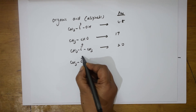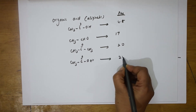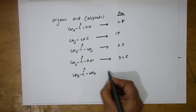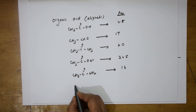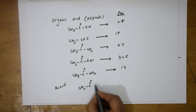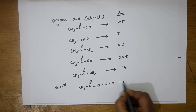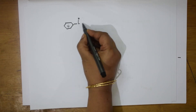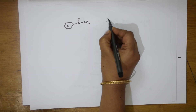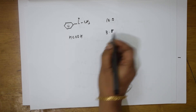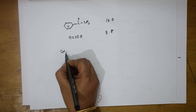For an ester, the pKa is 24.5. For an amide, it is 16. For a peracid — peracid means two oxygens, CH3CO... — the pKa is 8.2. For formic acid, it is 3.8.